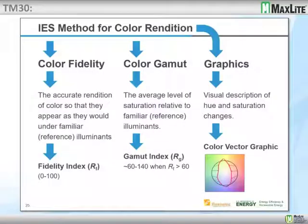Looking at the IES method for color rendition: the RF, or color fidelity index, measures the accurate rendition of colors so they appear as they would under familiar illuminance. The RG, or gamut index, is the average level of saturation relative to familiar illuminance. And then we have the color vector graph, which is a visual description of the hue and saturation changes.